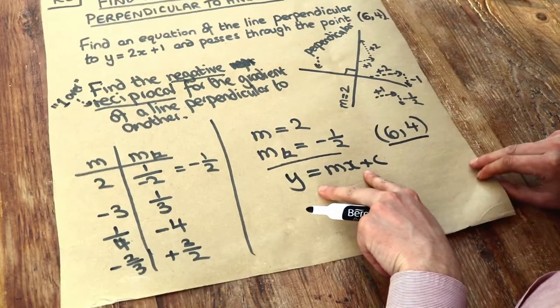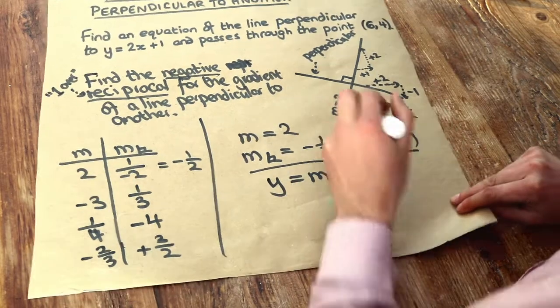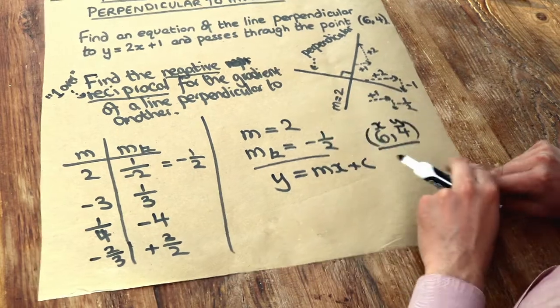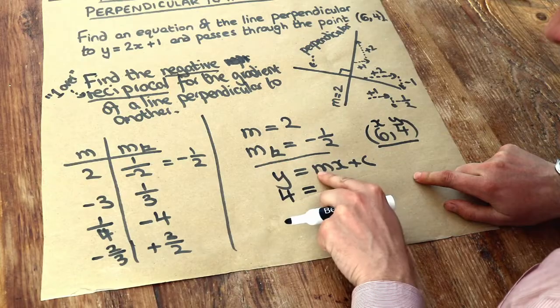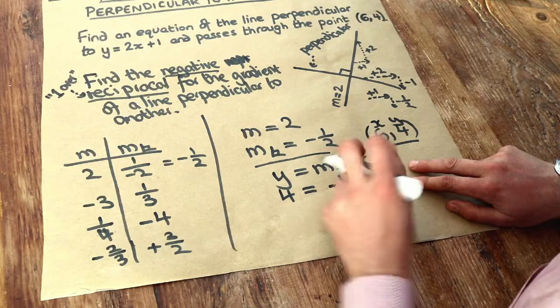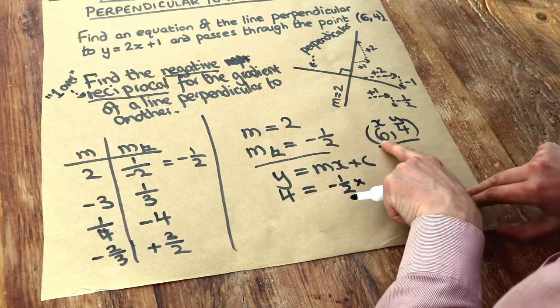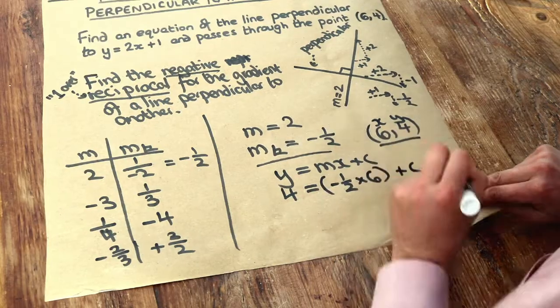All we do is we write y equals mx plus c and we substitute our known gradient and our known point into that equation to work out what the y intercept is, the c. So that's the x value, that's the y value of our known point. The y value is 4, sub that in. The m is negative half, and mx just means m times x. So it's going to be times by the x value of that point which is 6, and then plus c. Let's simplify that.